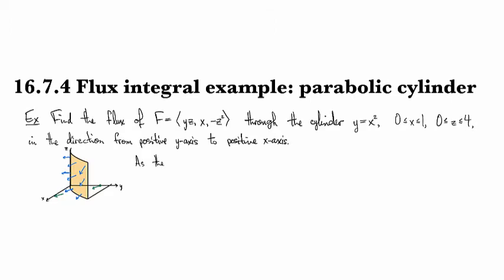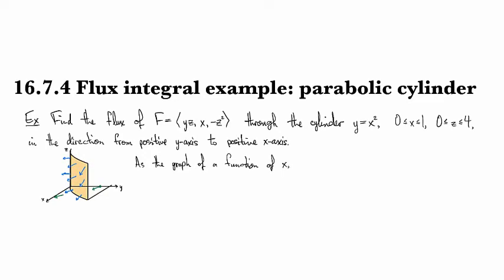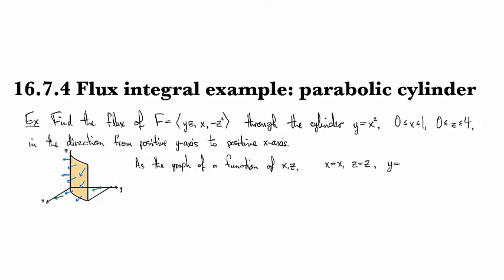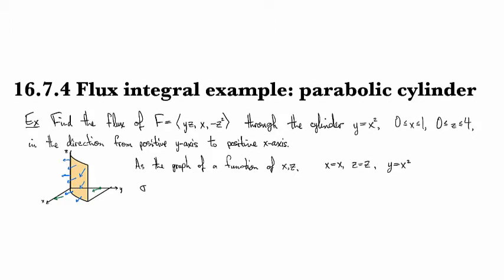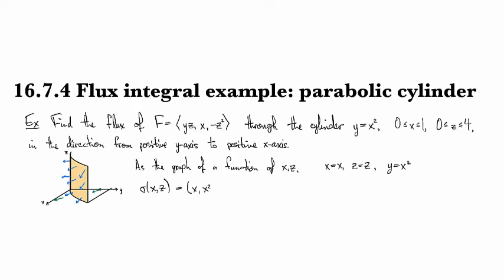So it's not the graph of a function, or is it actually, it is the graph of the function. If we take it as a graph over the xz plane. So as the graph of a function of x and z. So then we could use x is equal to x and z is equal to z and y is equal to x squared. That gives us a parametrization sigma of x and z. And so this is x, x squared, z.